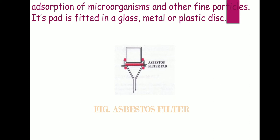Asbestos provides bacteria-free filtered liquid. In a Seitz filter, dust particles, foreign particles, and microorganisms can be removed. Asbestos is best in the Seitz filter because various particles and microorganisms are removed easily. The pad is fitted in a glass container — this is what happens in your Seitz filter, which is basically asbestos or perforated sheets.